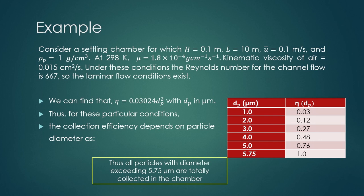Let us do an example. Consider a settling chamber with height H = 0.1 m and length L = 10 m, where gas flows with average velocity 0.1 m/s and particle density is 1 g/cm³. At 298 K, viscosity is 1.8×10⁻⁴ g/(cm·s) and kinematic viscosity of air is 0.015 cm²/s. The Reynolds number for the channel flow is found to be 667, so laminar flow conditions prevail. After substituting parameters in the efficiency equation, eta = 0.03024 dp², where dp is in micrometers.